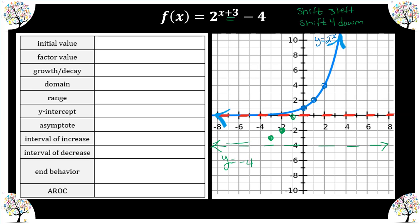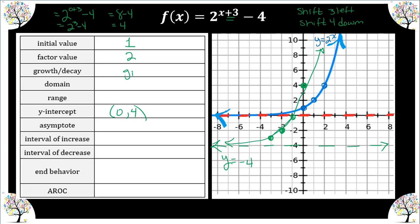Our graph looks something like this. The y-intercept: plugging in zero gives us 2^(0+3) - 4 = 2^3 - 4 = 8 - 4 = 4. So our y-intercept is (0, 4). The initial value was 1, our multiplier is 2 — that means it was a growth.